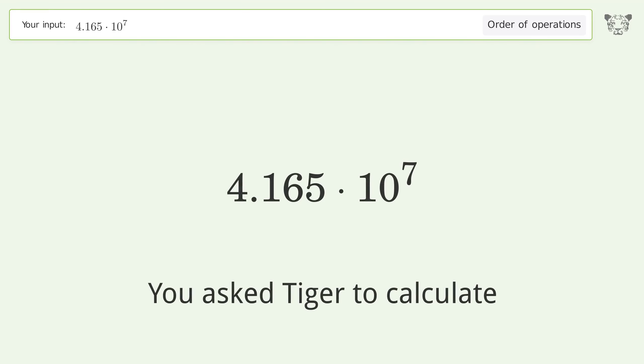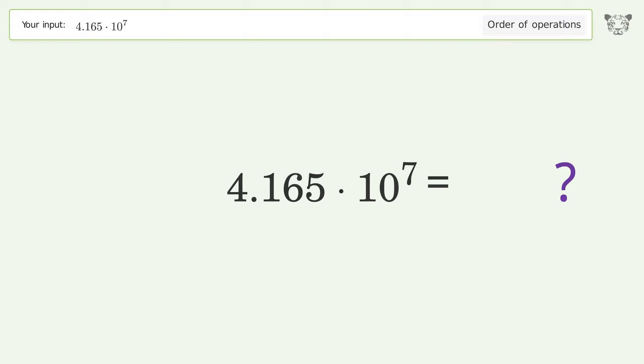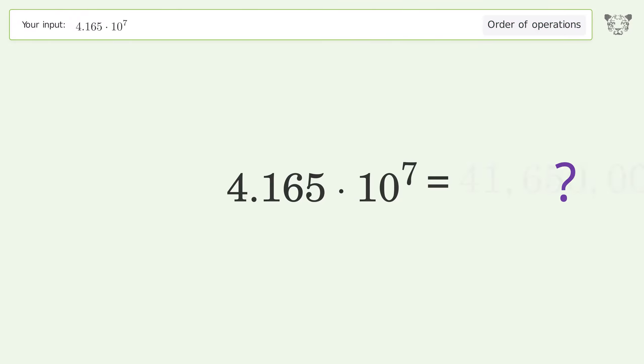You asked Tiger to calculate this. It deals with the order of operations. The final result is 41,650,000.